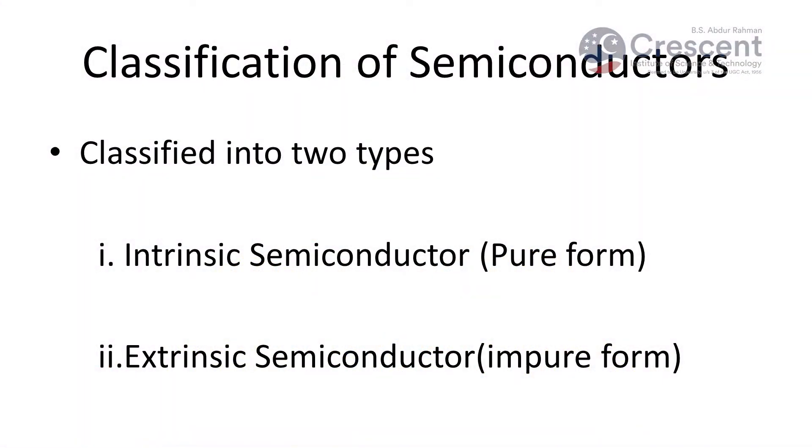Semiconductors will have a partial behavior between the conductor and the insulator. The best examples of semiconductors are germanium and silicon. The effect of semiconductors was experimentally verified by Michael Faraday. There are two important types of semiconductors: intrinsic semiconductors and extrinsic semiconductors.